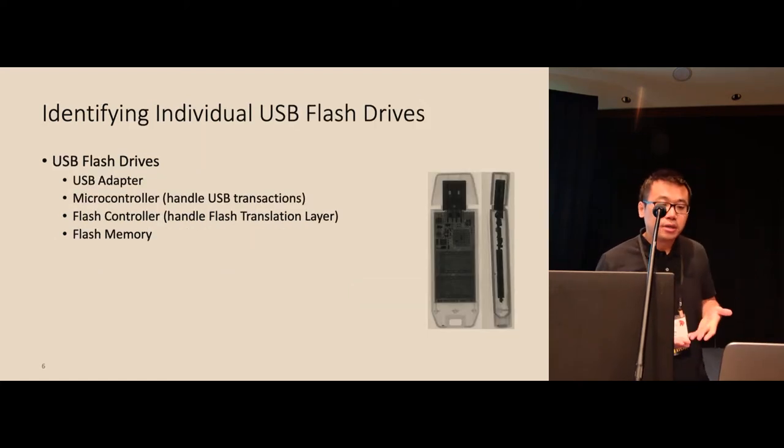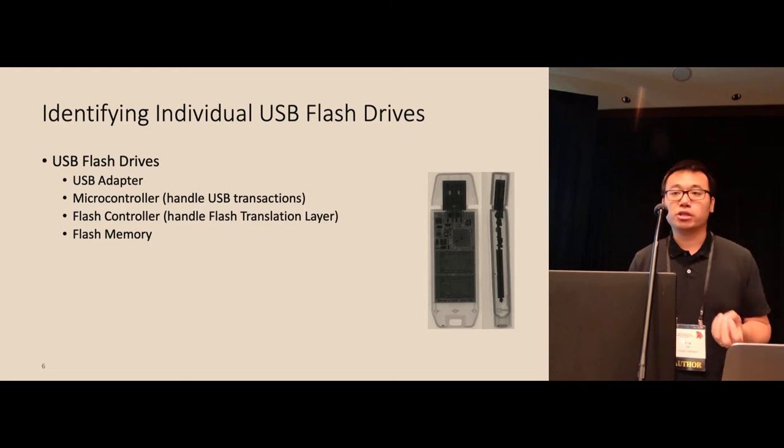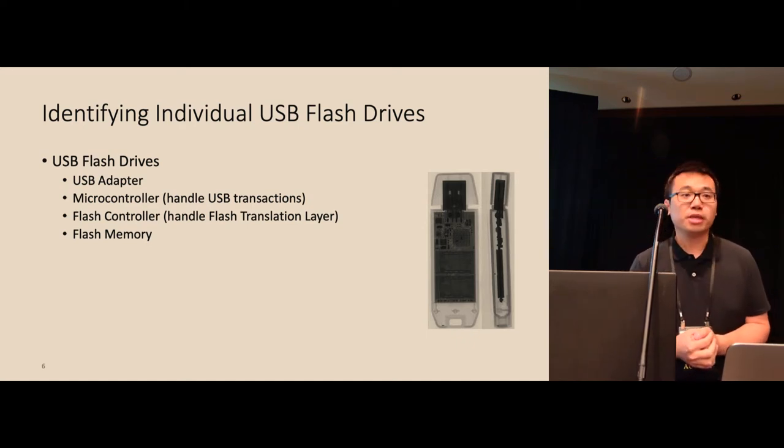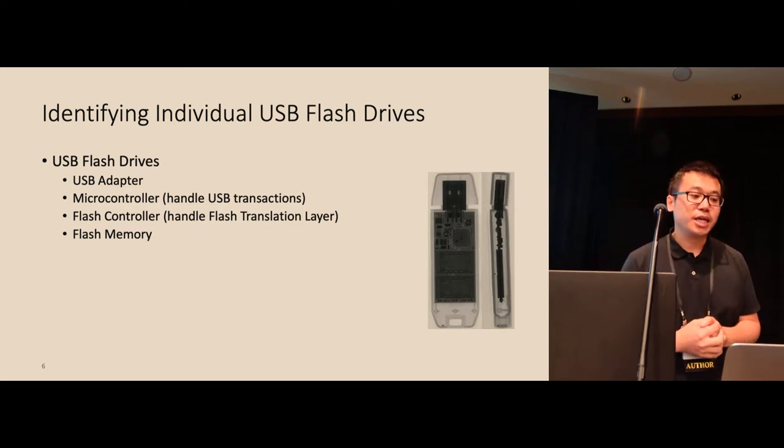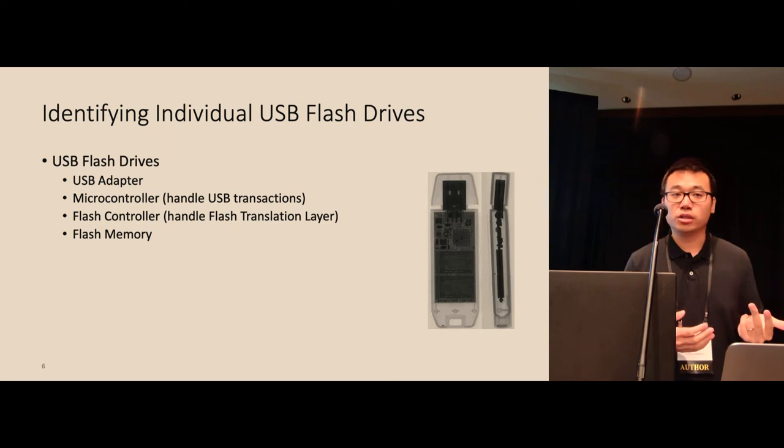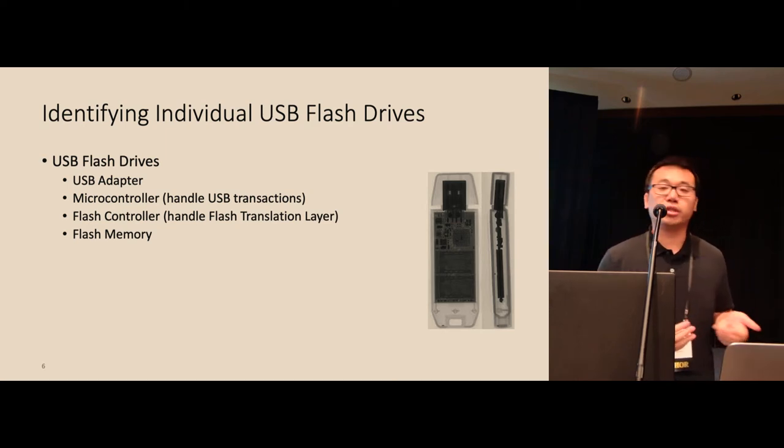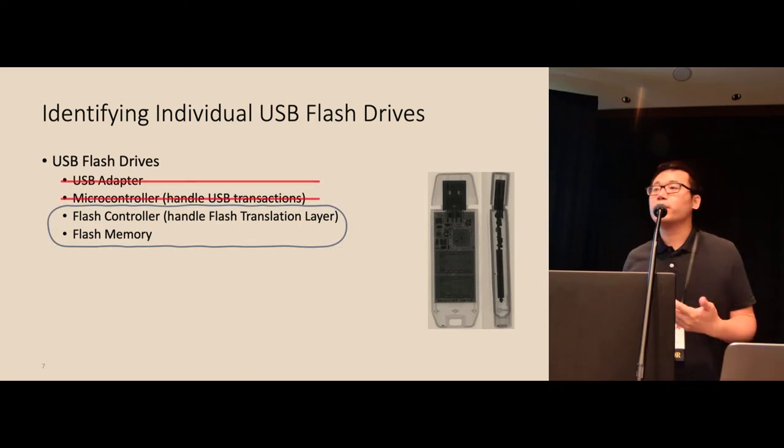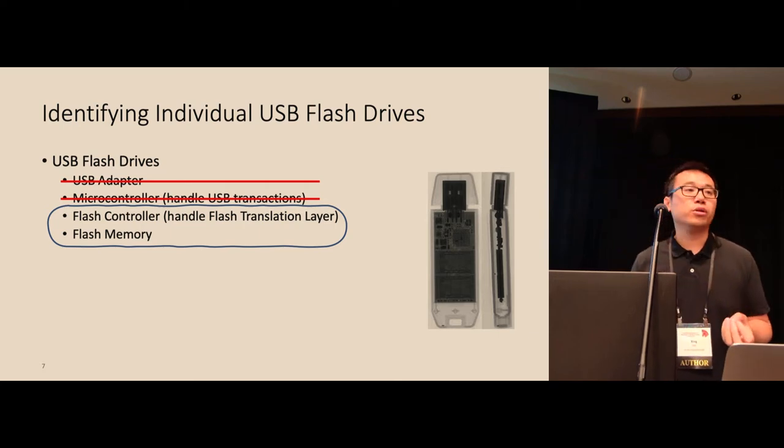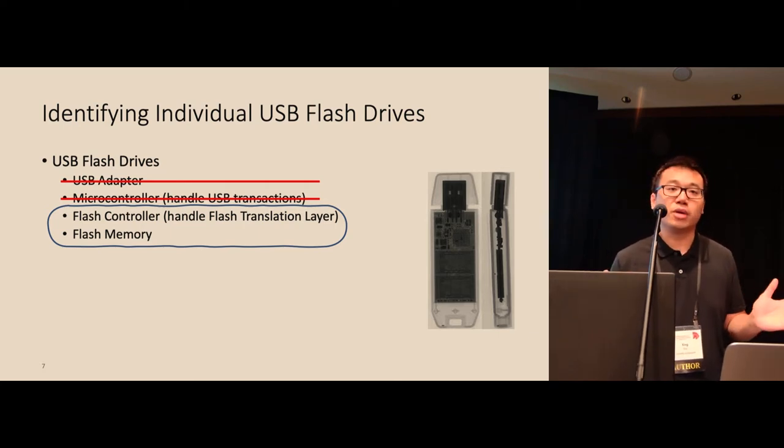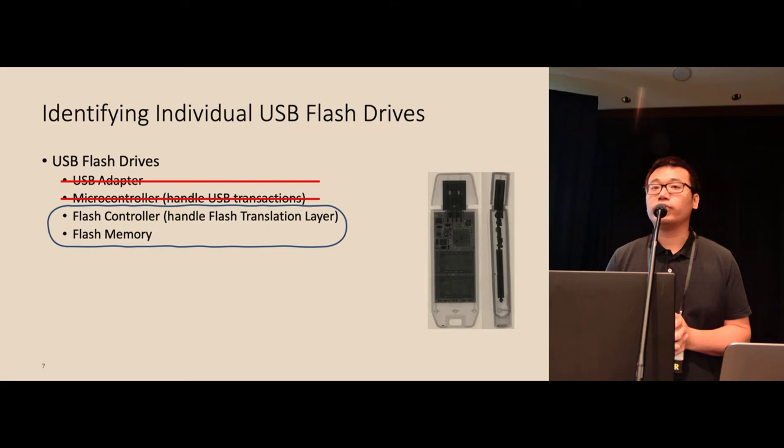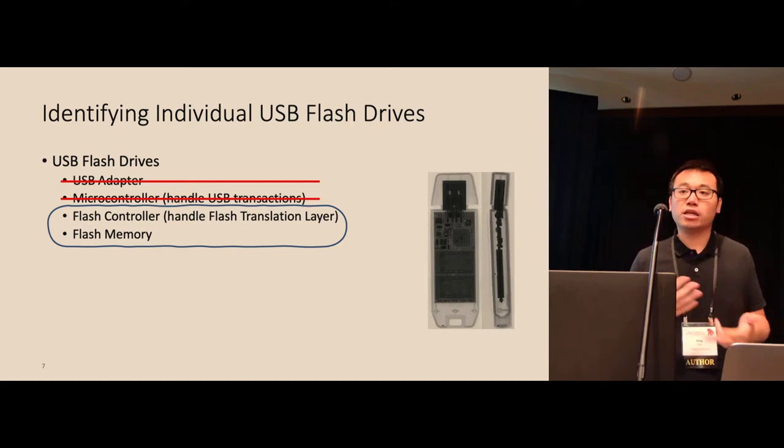Our approach is to create a unique timing profile for each USB device. Let's take a look at the components of a standard USB flash drive and their potentials. A typical flash drive contains multiple pieces, including a USB adapter, a microcontroller to handle USB transactions, a flash controller to handle the flash translation layer, and flash memory. With some experiments, we found that the first two components really don't have much information for us. But the rest of the two components, flash controller and flash memory, are two interesting and complicated components.